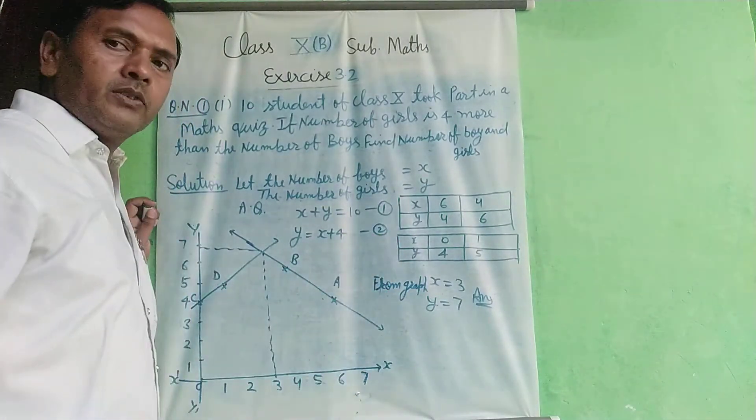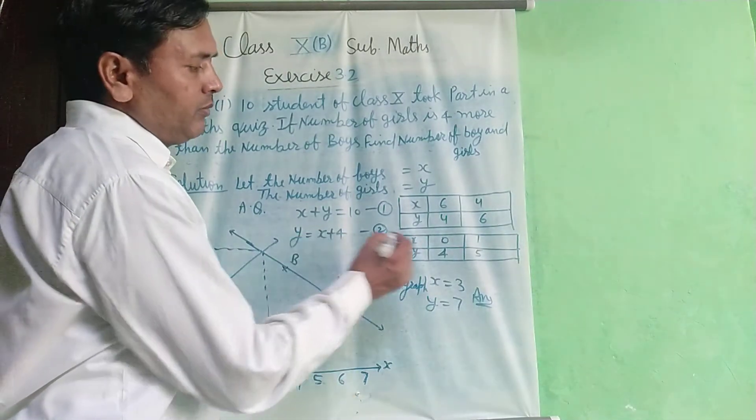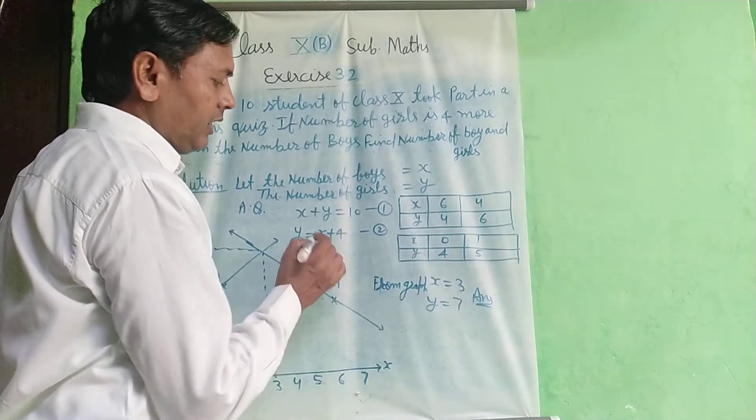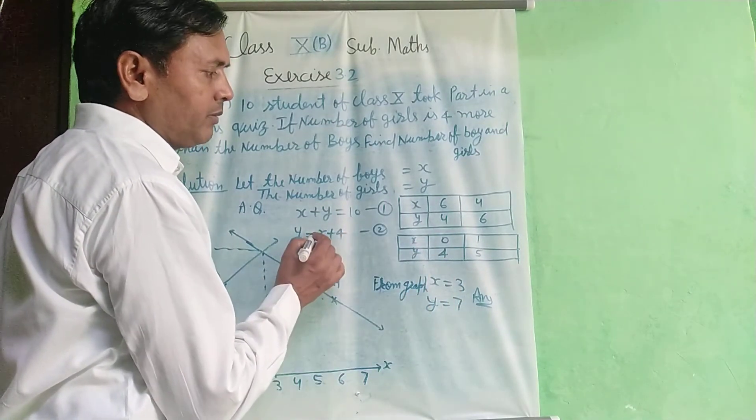Second table from the second equation. Put x is equal to 0, so y is equal to 4. x is equal to 1, so 4 plus 1 equals 5.